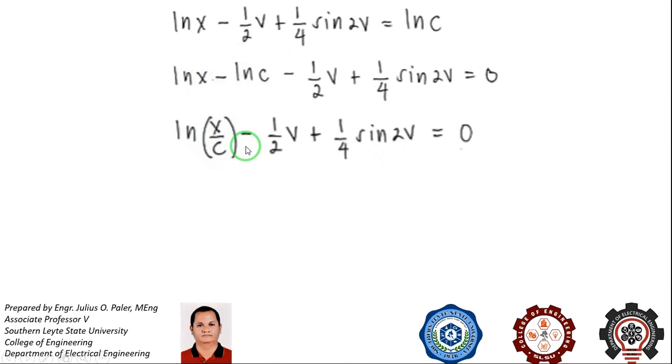Multiplying by 4 to eliminate the fractions, you will have 4 ln of x over C minus 2v plus sine of 2v equal to 0.